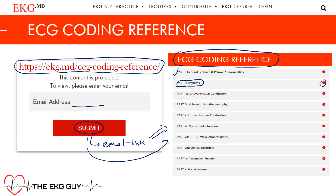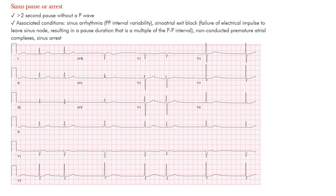Sinus pause or arrest — what's happening here is that the sinus node is not conducting. There's more than a two-second pause without a P wave coming from the sinus node. Some causes include sinus arrhythmia with P-to-P interval variability, sinoatrial exit block (failure of the electrical impulse to leave the sinus node, resulting in a pause that is a multiple of the P-to-P interval), non-conducted premature atrial complexes, and sinus arrest.